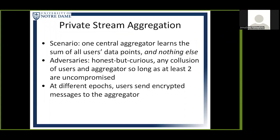Now I'll give an overview of private stream aggregation. The scenario is that we consider one single central aggregator that learns the sum of all users' data points and nothing else. The adversaries we consider against PSA are honest but curious, and we consider any collusion of users and the aggregator as long as at least two are left uncompromised. Other works, particularly those in robustness of PSA, may have stronger adversaries than honest but curious, but that is out of scope for our work.